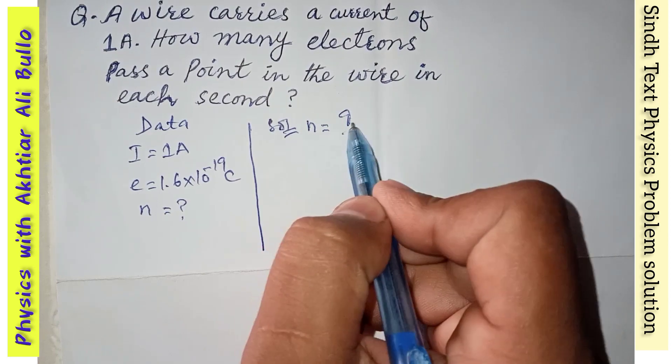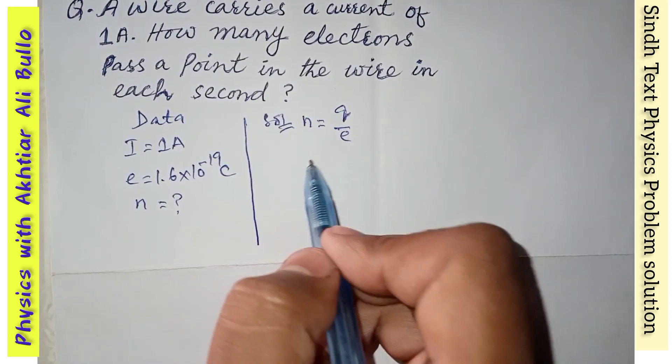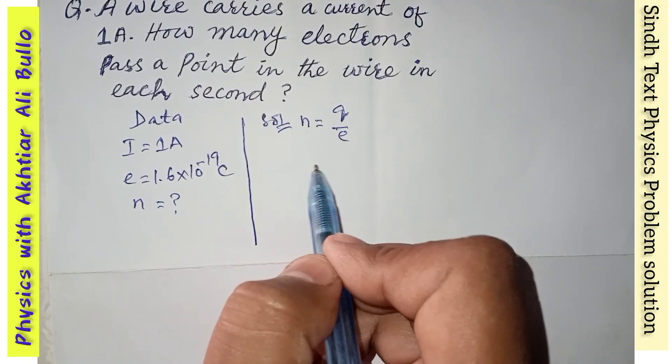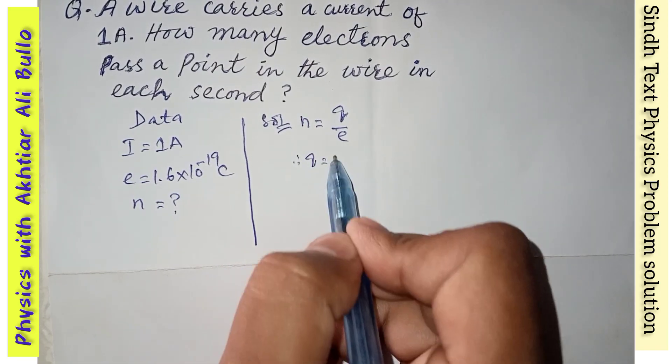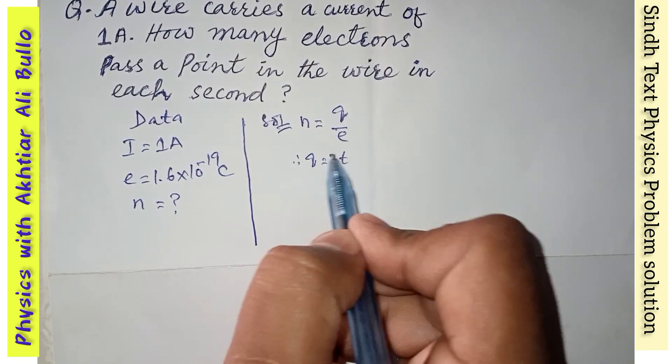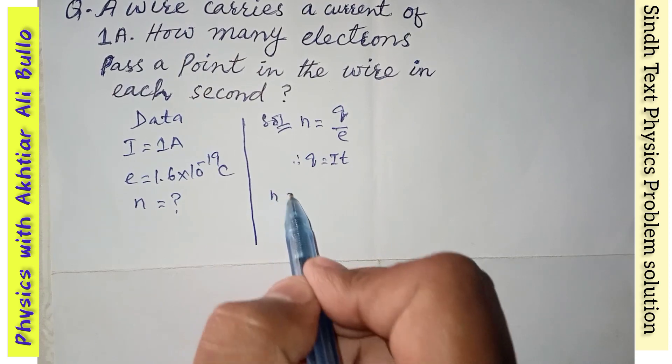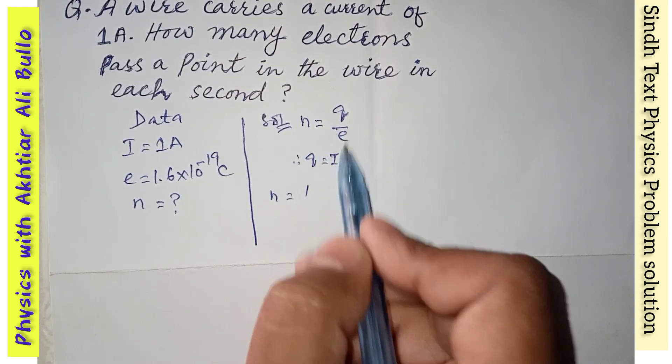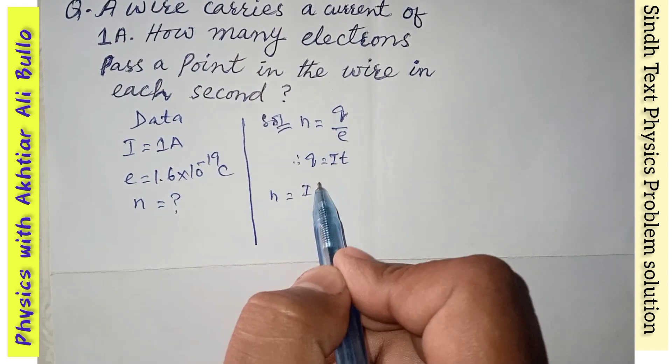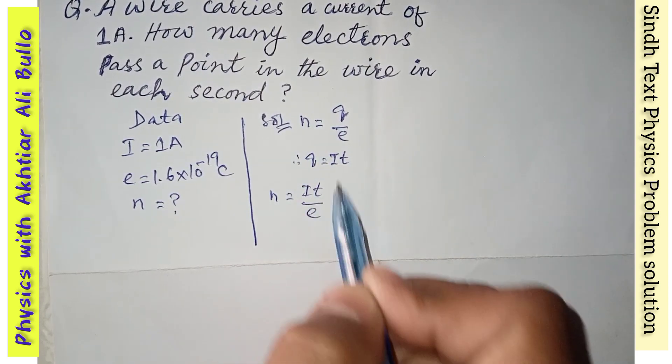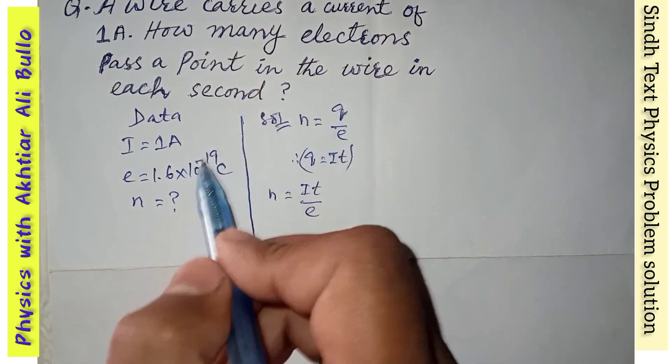is equal to Q upon e. As we know that Q is equal to I times T, so n will be equal to, by placing the value of Q, I times T upon e. As time is one second,